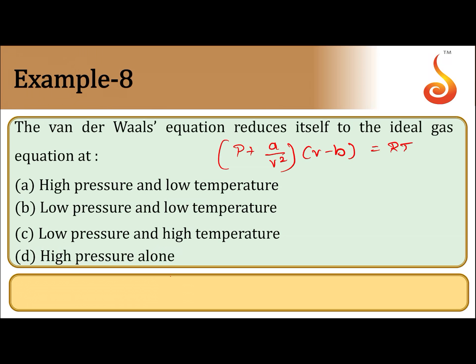What happens at high pressure? At high pressure, the volume occupied by the gas will be less. At that reduced volume, the volume occupied by one molecule is not negligible — it is considerable. So B cannot be neglected at high pressure and low temperature.